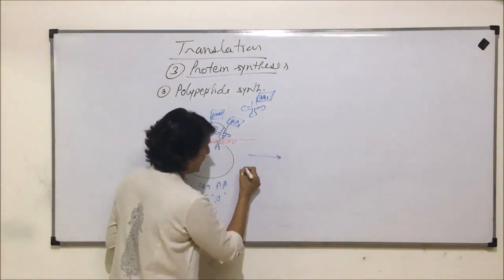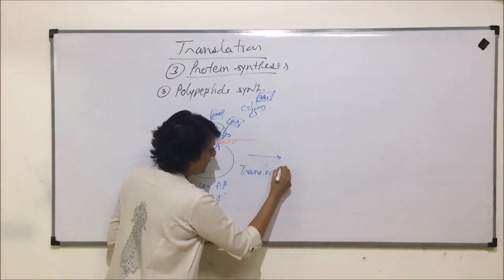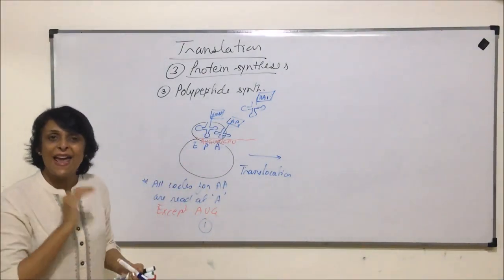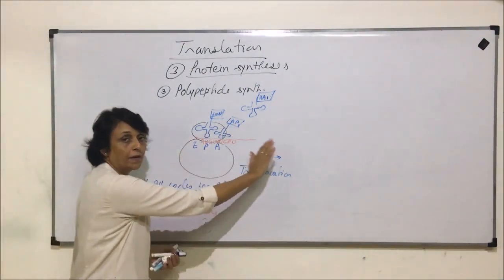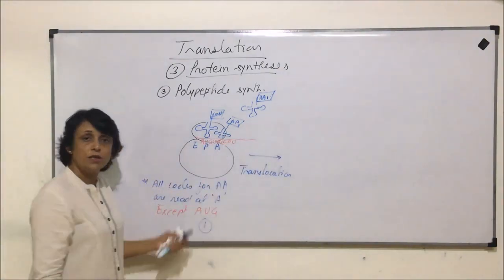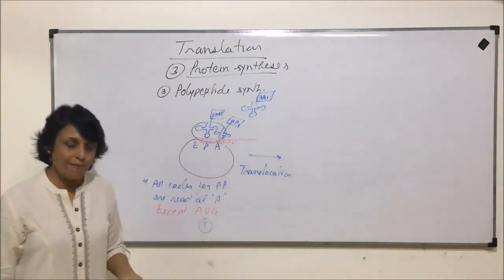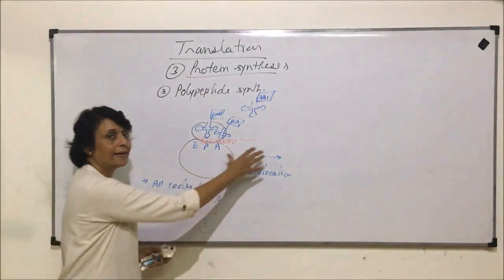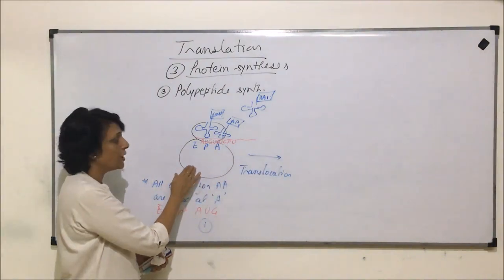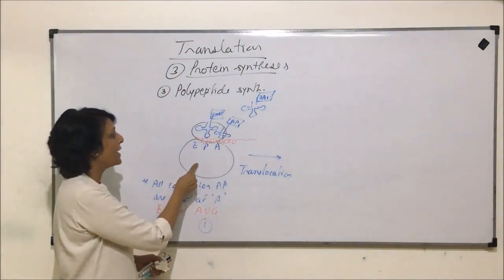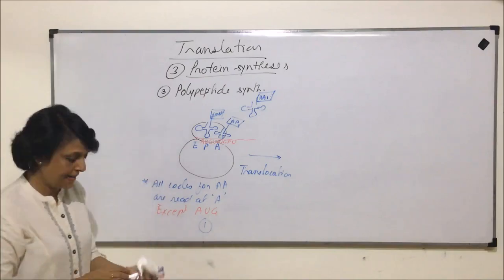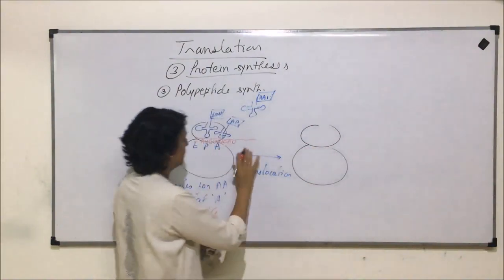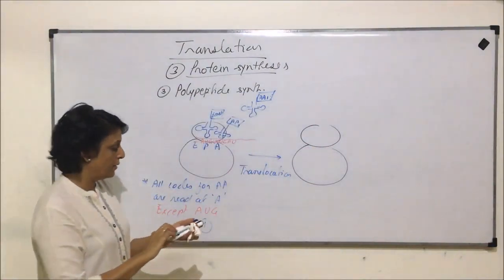So now what happens is translocation. That means the ribosome moves on mRNA further. So it gets extended or moves towards the other end or it starts moving on mRNA. So after it has moved, how does it look? Let us draw that diagram where we would see a shift in the position of the ribosome on mRNA. So now in the next stage, we see the position of these codes would change.